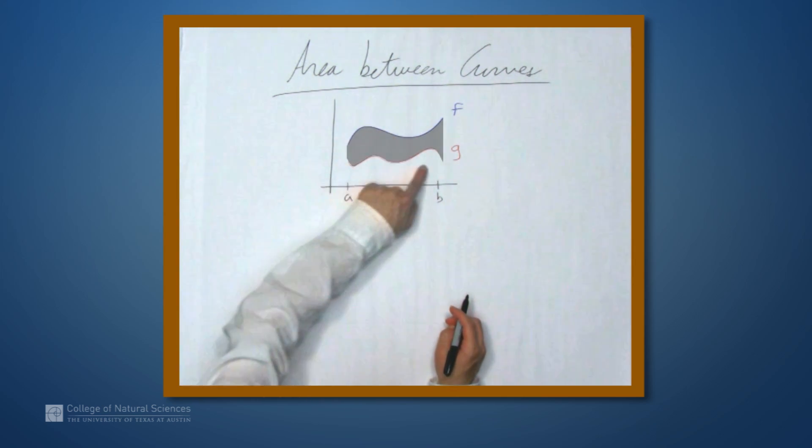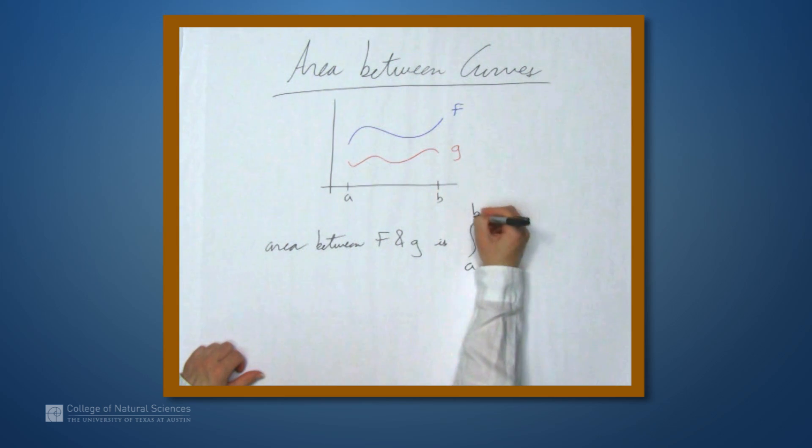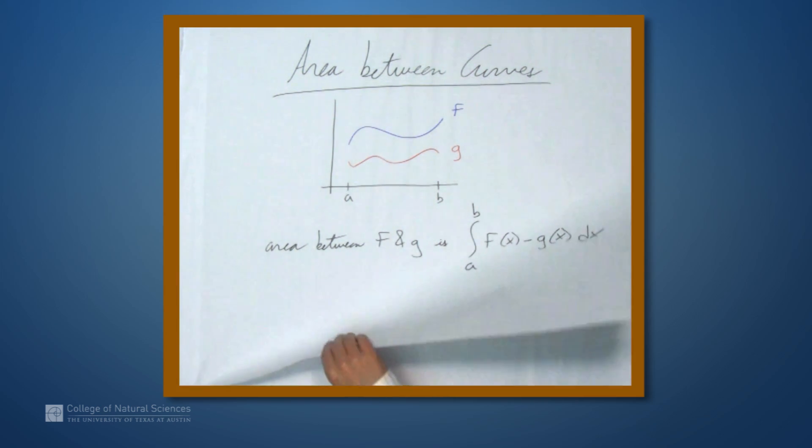And we're left with just the area between the two curves. So that means that the area between f and g is the integral from a to b of f of x minus g of x dx. So let's look at an example of this type.